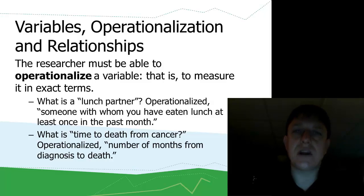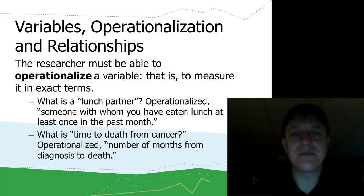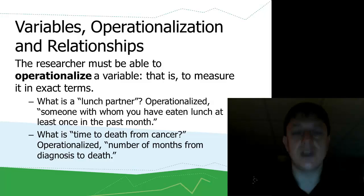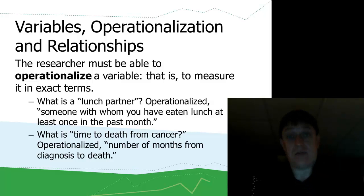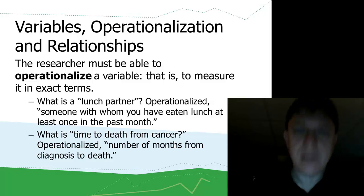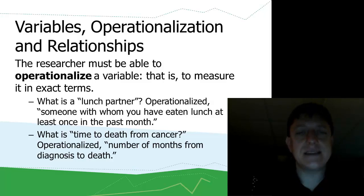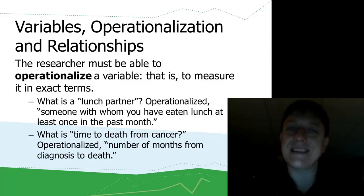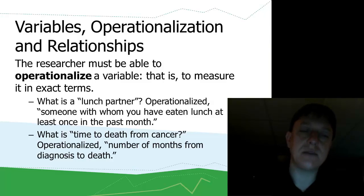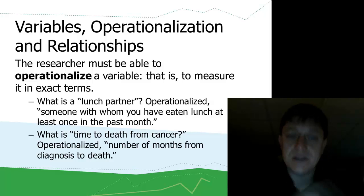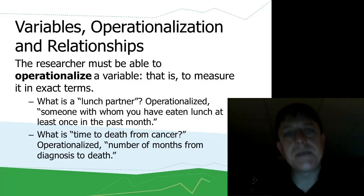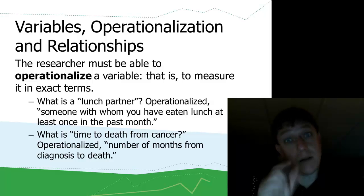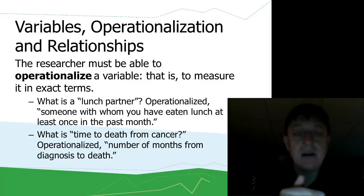When we study variables, it's important to operationalize them. To operationalize is a fancy word that simply means you have to measure your variable in exact terms. So when I say 'time to death from cancer,' I should be more specific. To operationalize it is to make it so that anybody can make the same measurement and be sure those measurements are comparable. So instead of 'time to death from cancer,' I say 'number of months from diagnosis to death.'